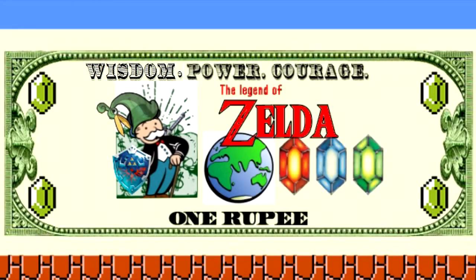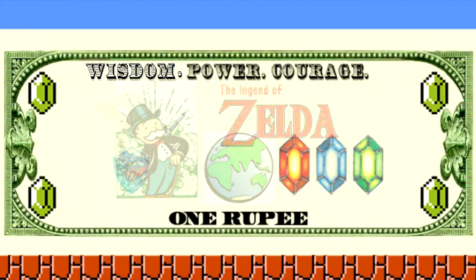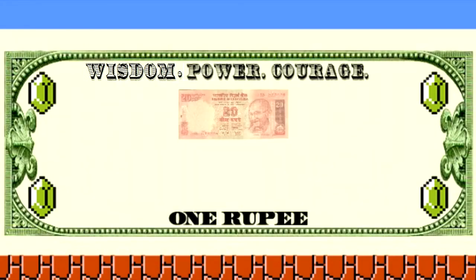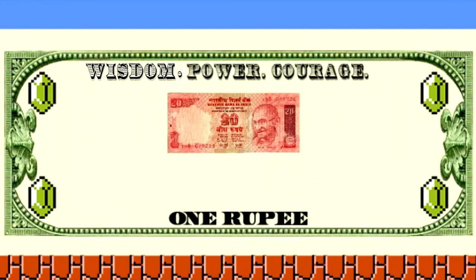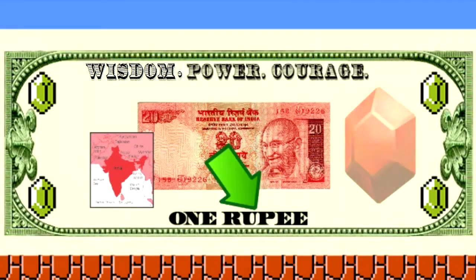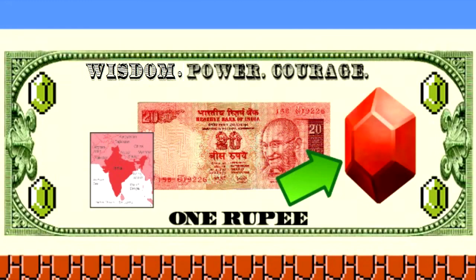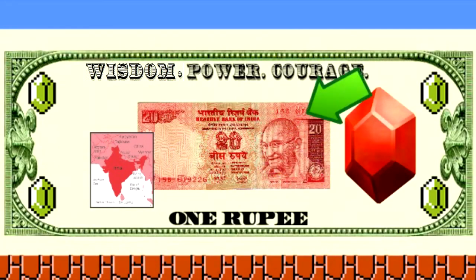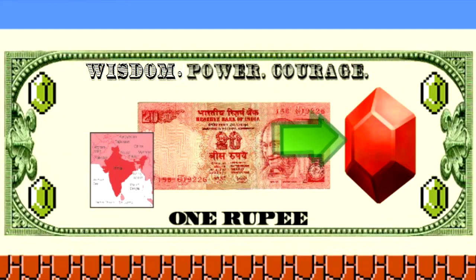Let's start with the facts. Technically, in real life, Rupees do exist. The Rupee is actually the name for the modern form of currency in India. Now, other than sharing a name, the Hylian Rupee and the Indian Rupee have practically nothing in common. The Indian Rupee is paper money, whereas the fictional Rupee is represented by different colored jewels. Along with the variation in appearance, there is also a rather large difference in monetary value.